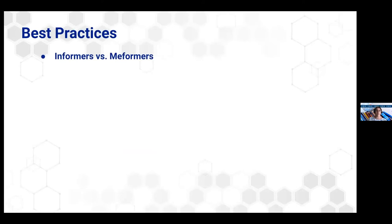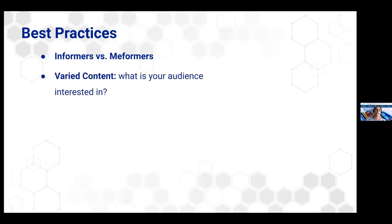A couple of best practices: you really want to be an informer, not a 'me-former.' An informer shares updates that are information-based; a me-former shares information about themselves. Informers have more than two times the followers of me-formers, and sharing information on social media is better for your follower count than sharing information about yourself. So informing people about your research does a lot better than informing people about yourself. Also vary your content — different types of content, different photos, videos, things that relate to what you're doing, and not the same type of content over and over again because people will get bored.